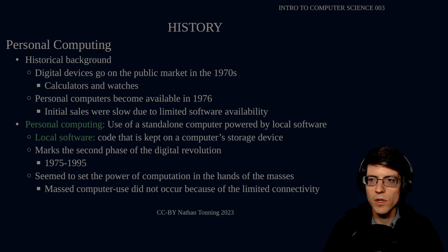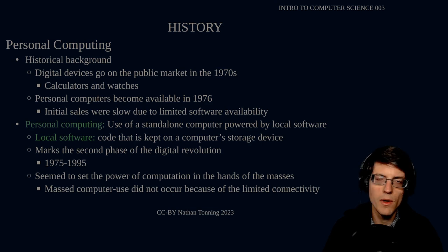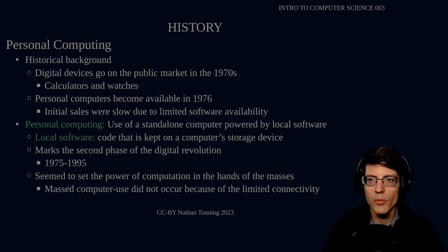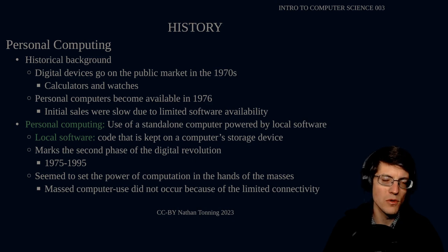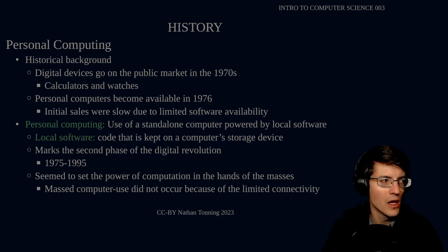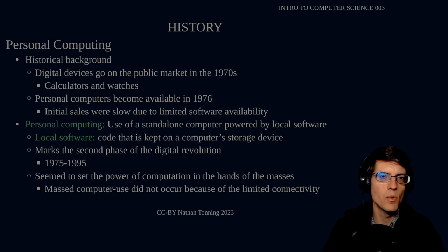What is the historical background for personal computing? It starts with digital devices going on the public market in the 1970s. This includes calculators and watches — those were the primary digital devices available at that time. Personal computers became available in 1976. However, initial sales were slow due to limited software availability. You didn't want to buy this expensive piece of equipment if you didn't have the capability to perform tasks with it, so you had to wait for the software to catch up before computers really took off.